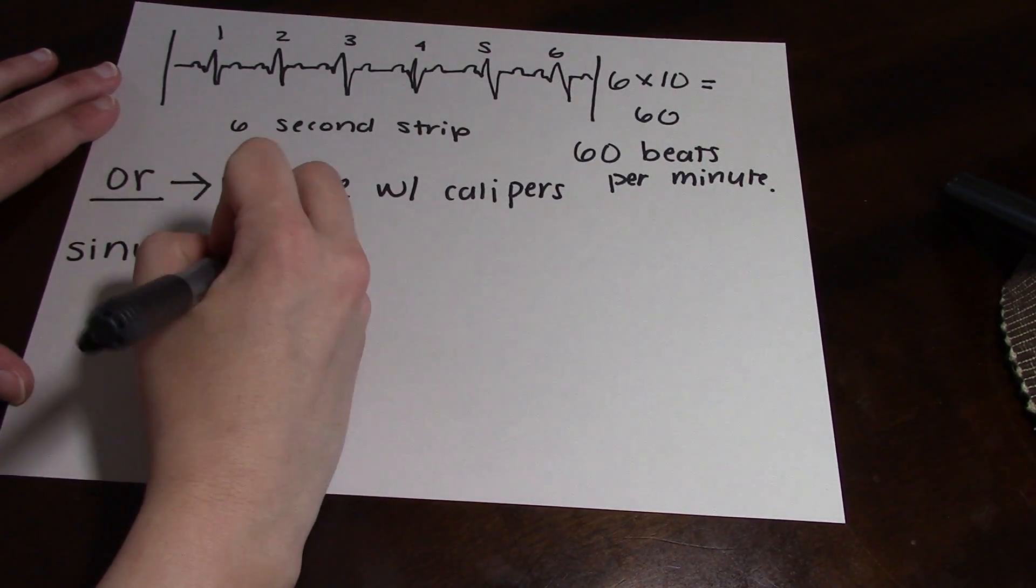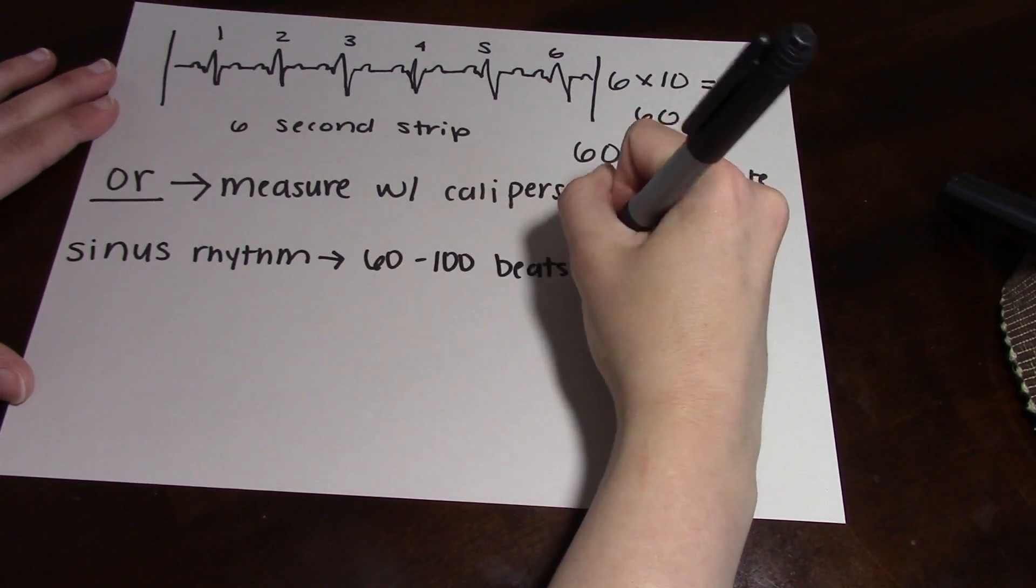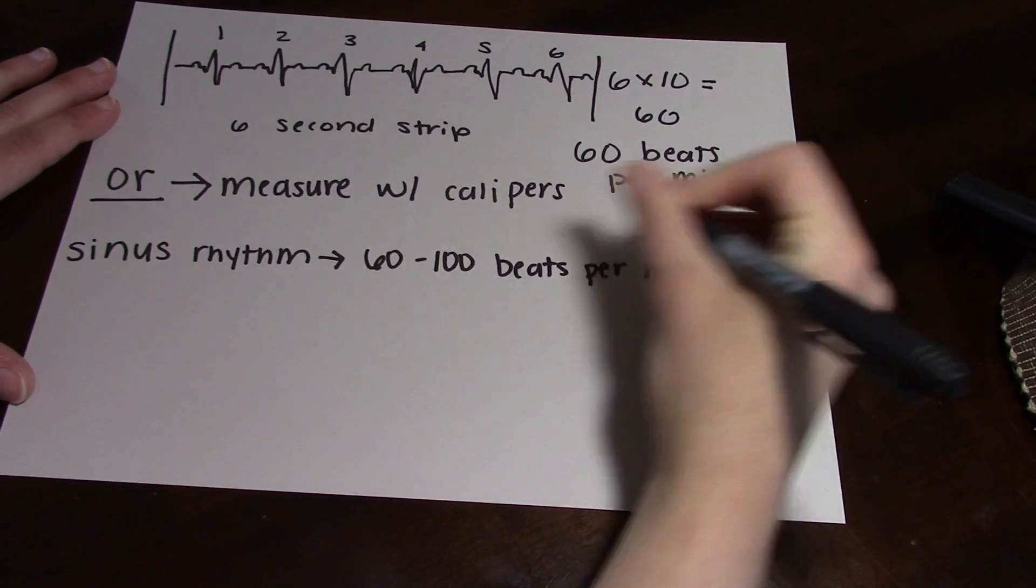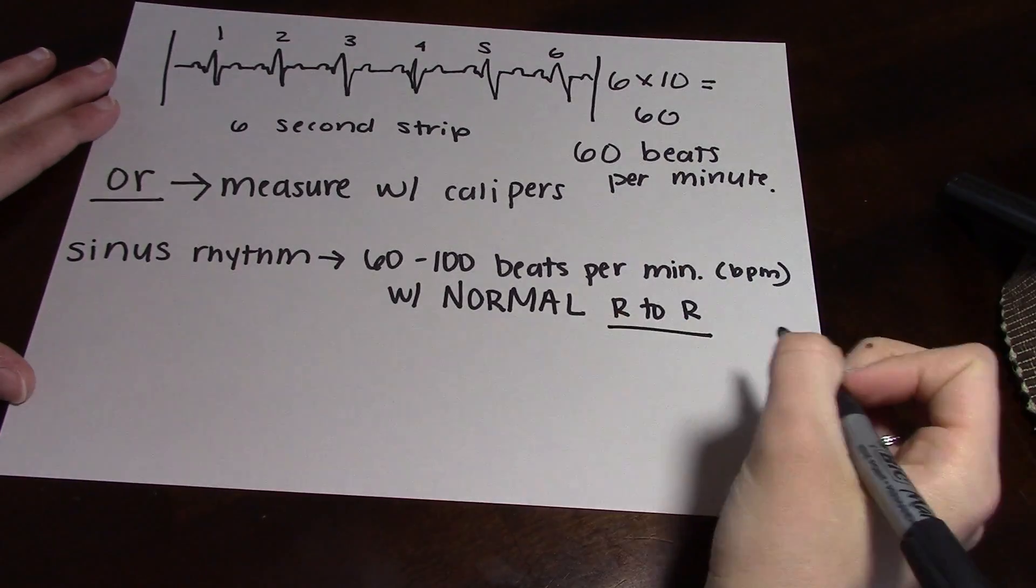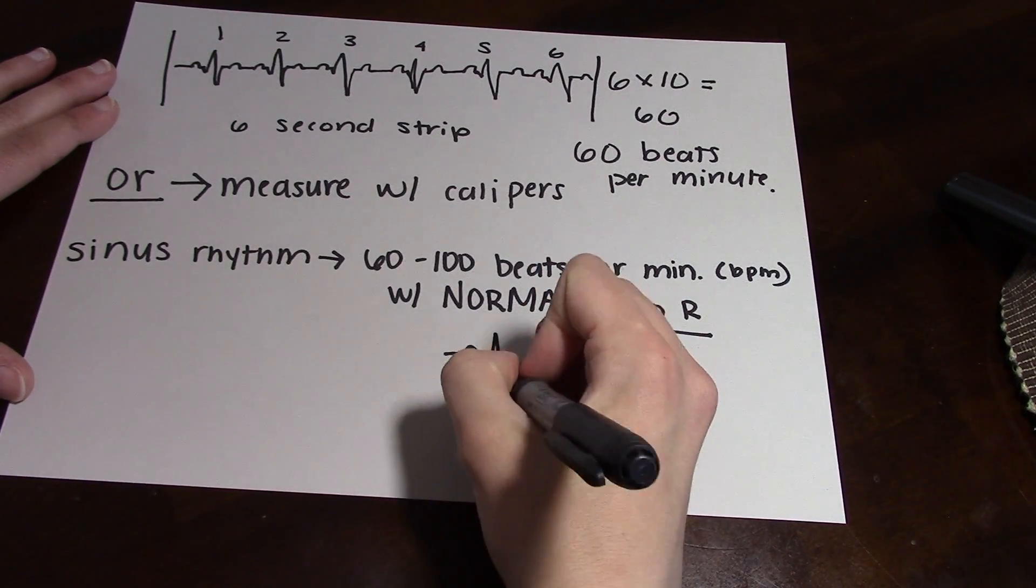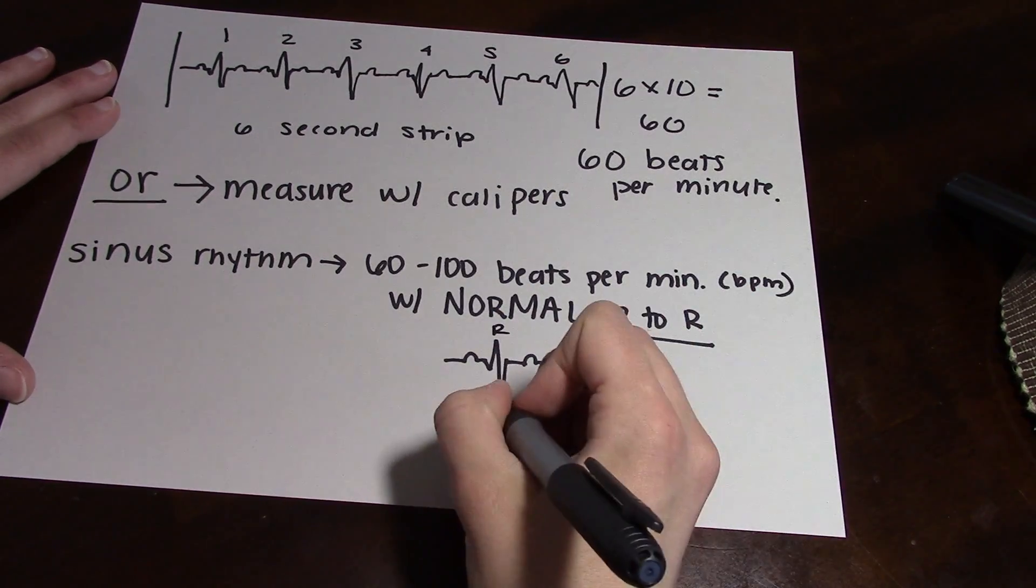So the first rhythm is a sinus rhythm, and this is going to be 60 to 100 beats per minute. It's going to have an evenly spaced R to R interval. Every single time it should be the same. Also remember that for every one P wave you will have a QRS in this rhythm.